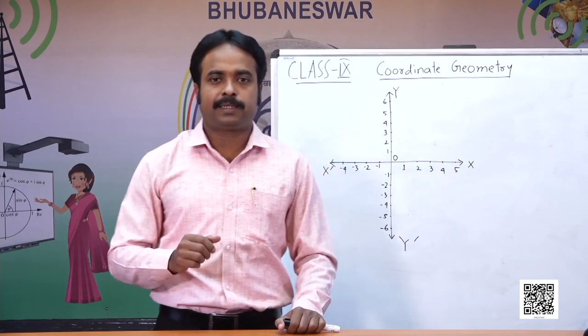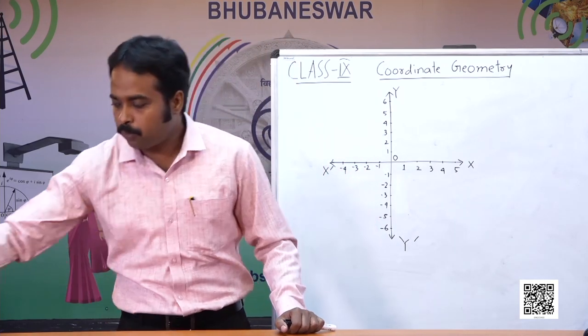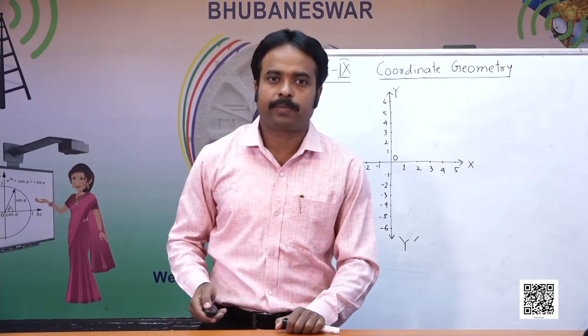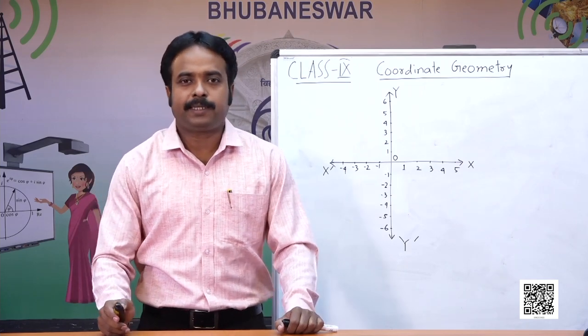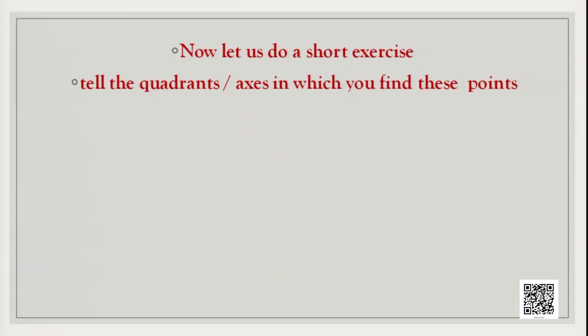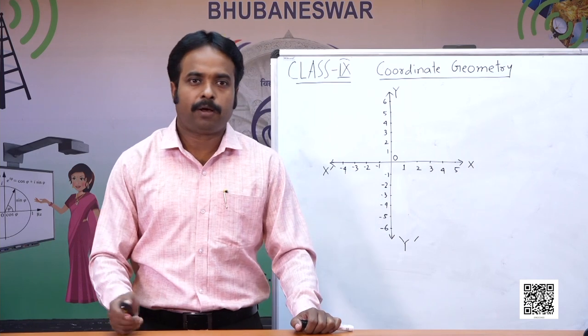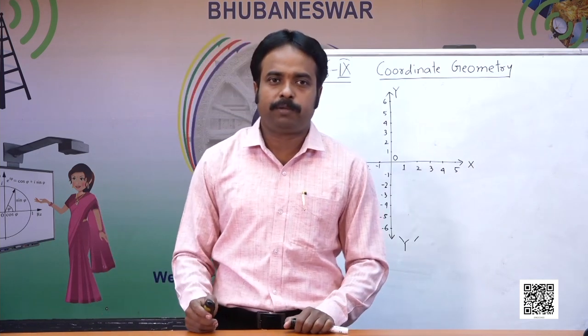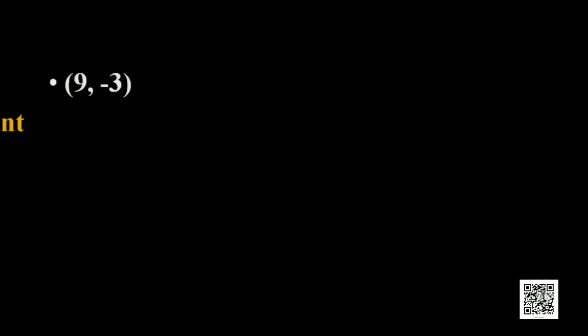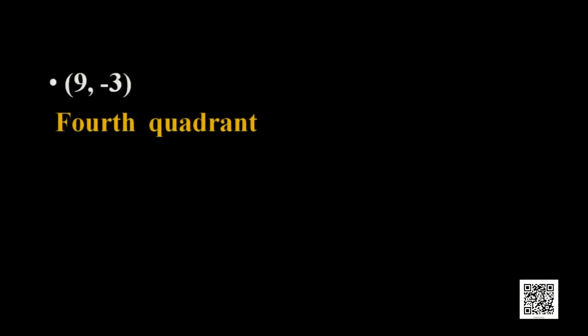Today let us start this class with some quick exercise. Tell me the quadrant or axis in which you find these points. For the point 9 comma minus 3: the x-axis component is positive and the y-axis component is negative, so therefore it is the fourth quadrant.